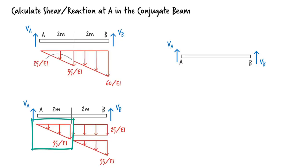The area of this triangle is 35 over EI and its center is 1.33 meters away from point A. The area of this triangle is also 35 over EI and its center is 0.67 meters away from point B.